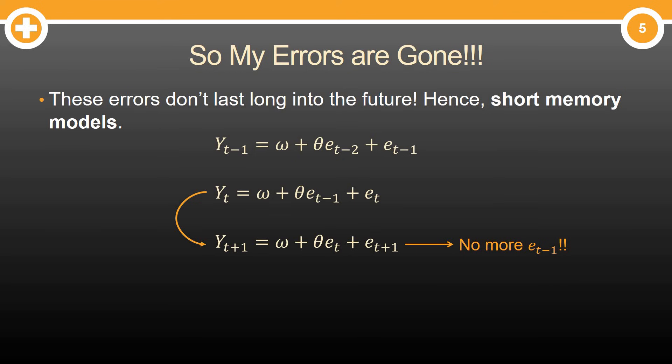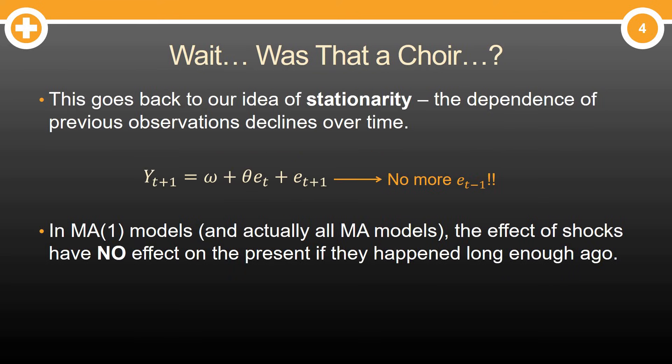It's basically going back to this idea of stationarity. Stationarity was the idea that the dependence of previous observations declined over time. Not only do they decline in a moving average model, they actually disappear. They're completely gone as long as you go far enough into the future.